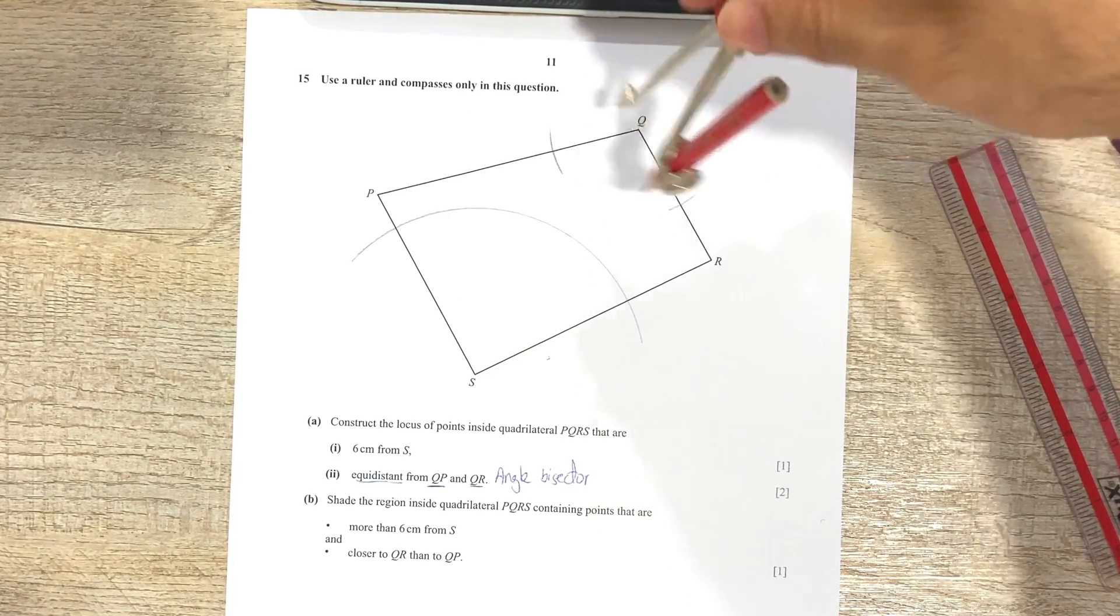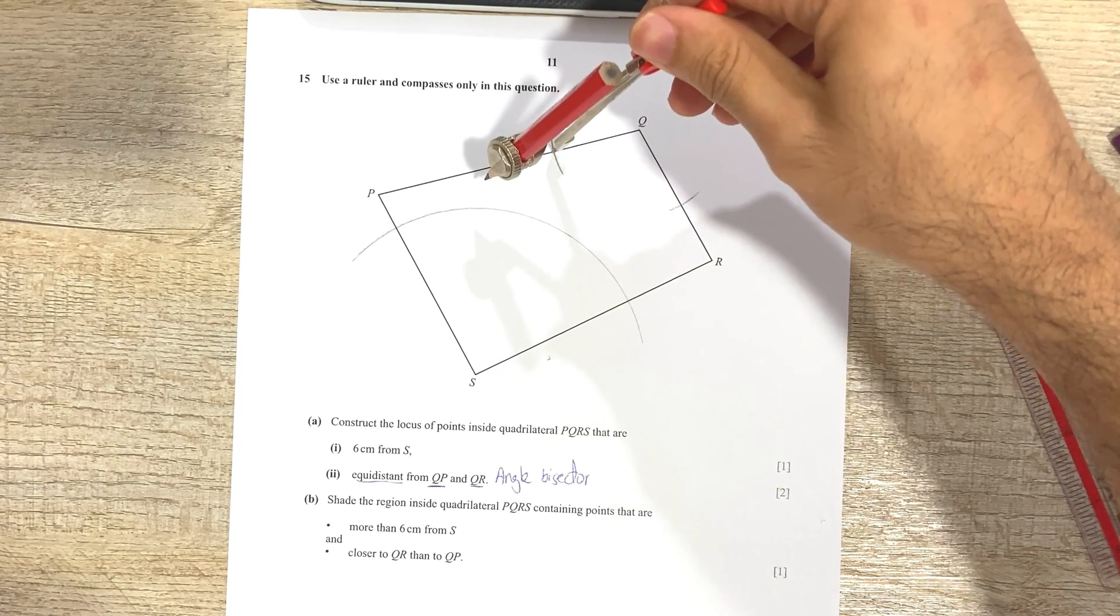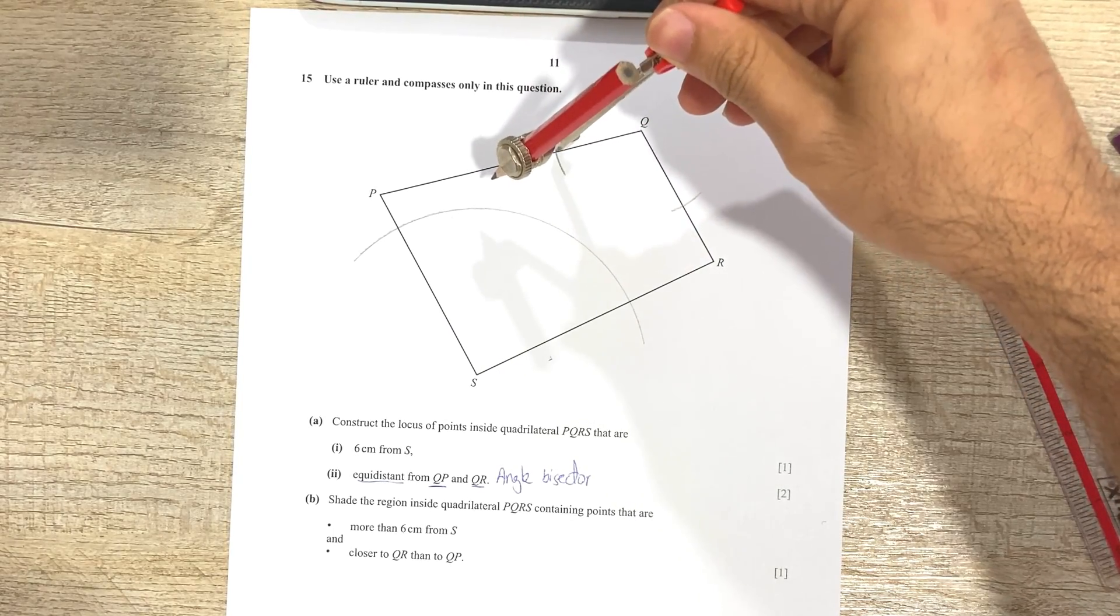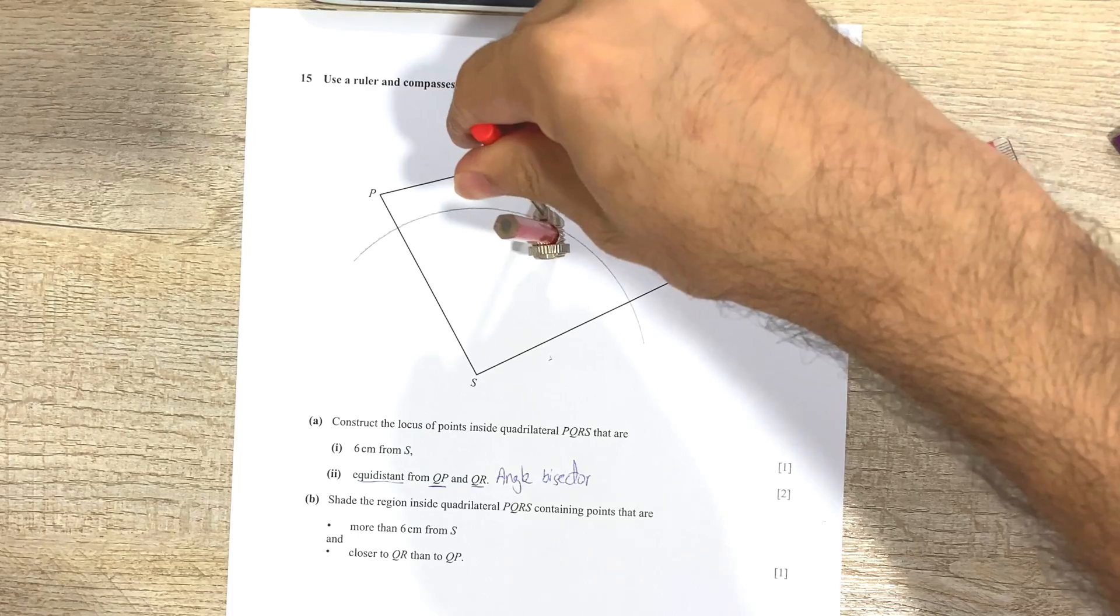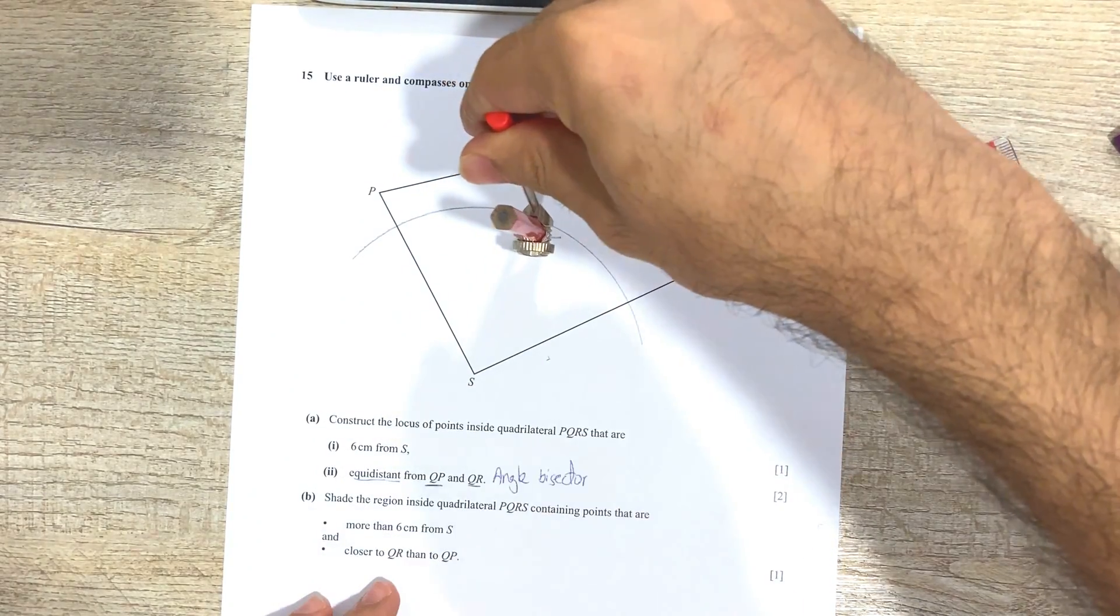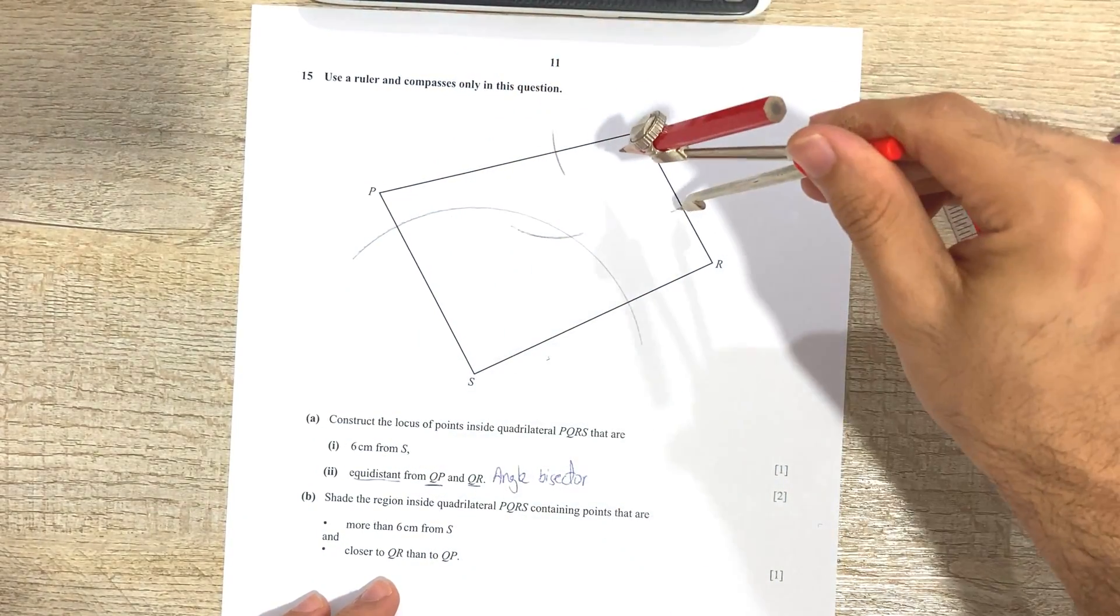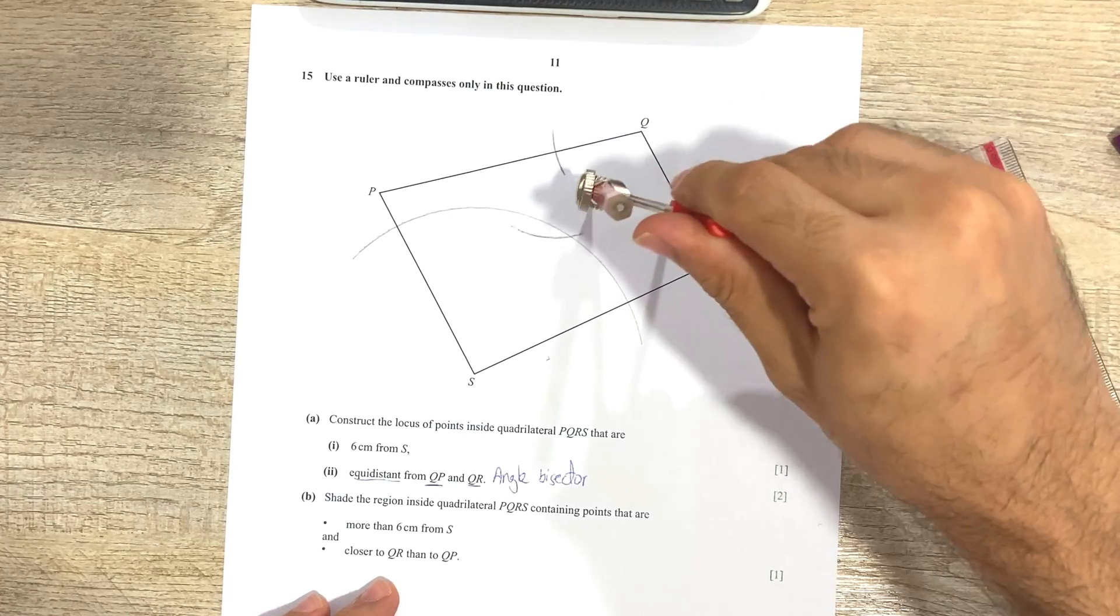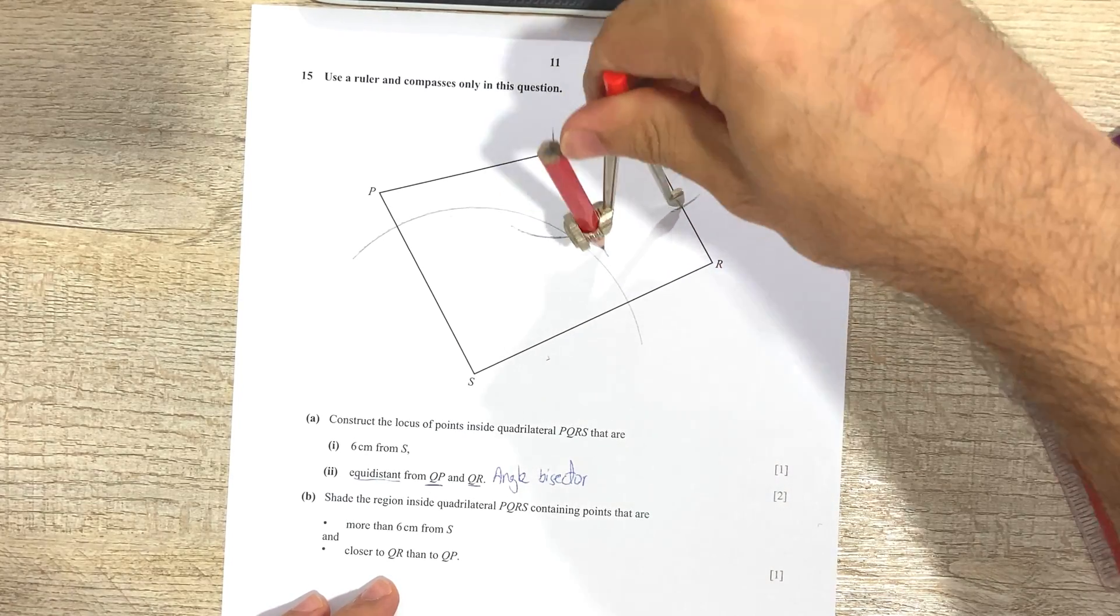Okay, then I'm going to place my compass at one of the two arcs that I've made, and I'm going to make an arc directly in front of the point Q. Okay, so that's one arc here. Make sure not to get lost in between so many arcs.